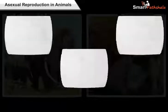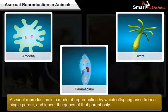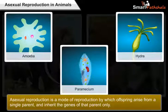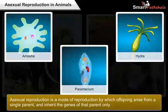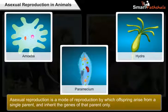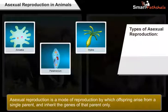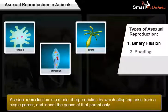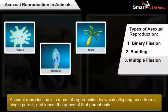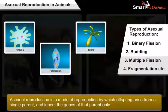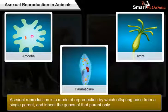Asexual reproduction is a mode of reproduction by which offspring arise from a single parent and inherit the genes of that parent only. There are different types of asexual reproduction like binary fission, budding, multiple fission, and fragmentation. Hydra, amoeba, and paramecium are some of the animals in which asexual reproduction takes place.